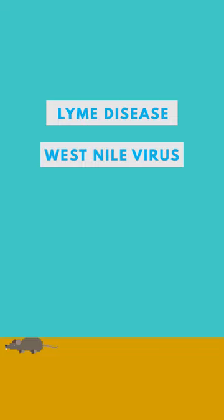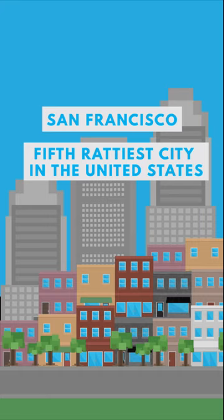San Francisco is the fifth rattiest city in the United States, and they have decided to deal with their rat problem using birth control.